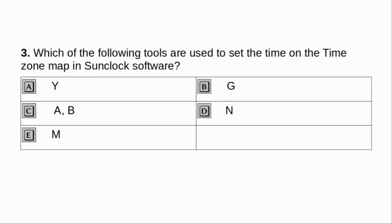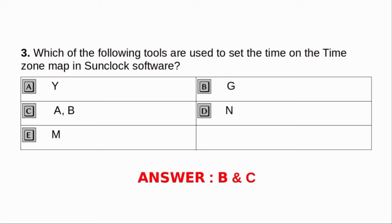Which of the following tools are used to set the time on the time zone map in SunClock software? A. B, G. B. A, B. C. N. D. M. Answer: B and C.